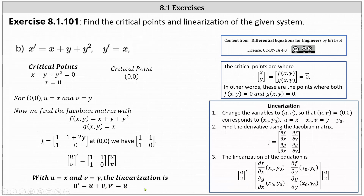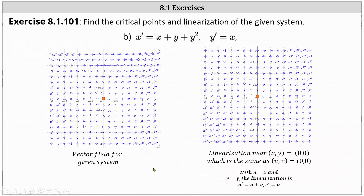Let's look at the slope fields for the original system and the linearization. On the left, we have the vector field for the given system, with the critical point at the origin shown in orange. On the right, we have the linearization near x, y equals zero comma zero, which is the same as u, v equals zero comma zero. Notice how the linearization is a good approximation of the original slope field around the critical point zero comma zero. I hope you found this helpful.